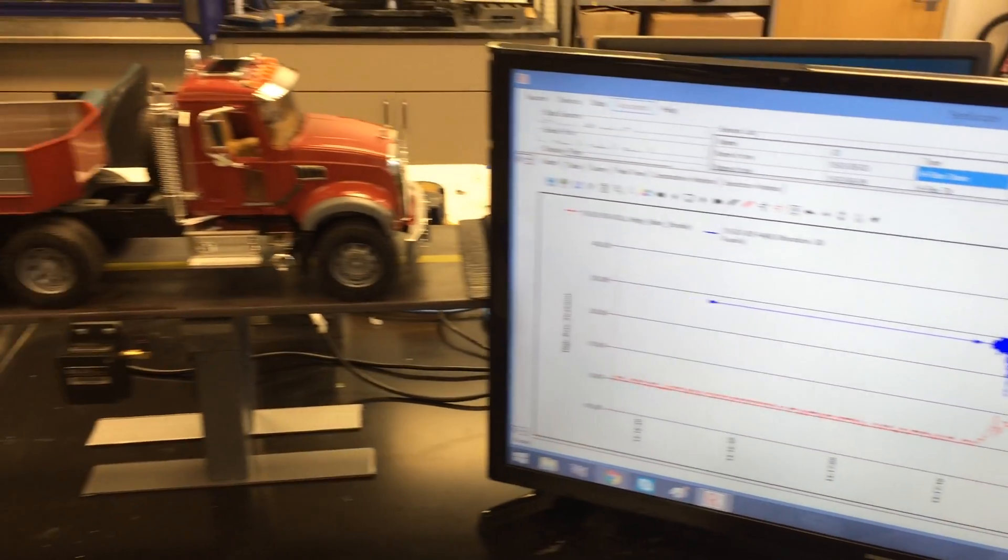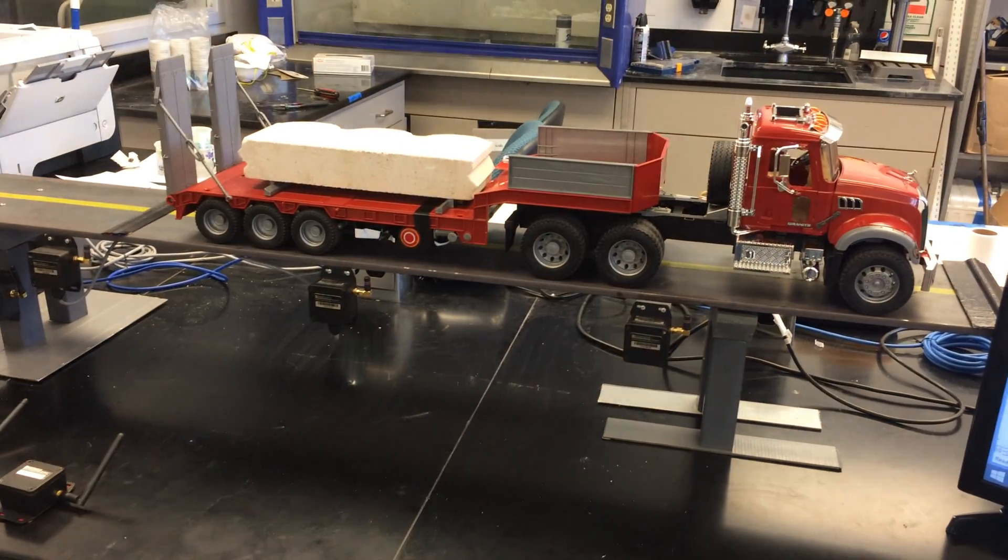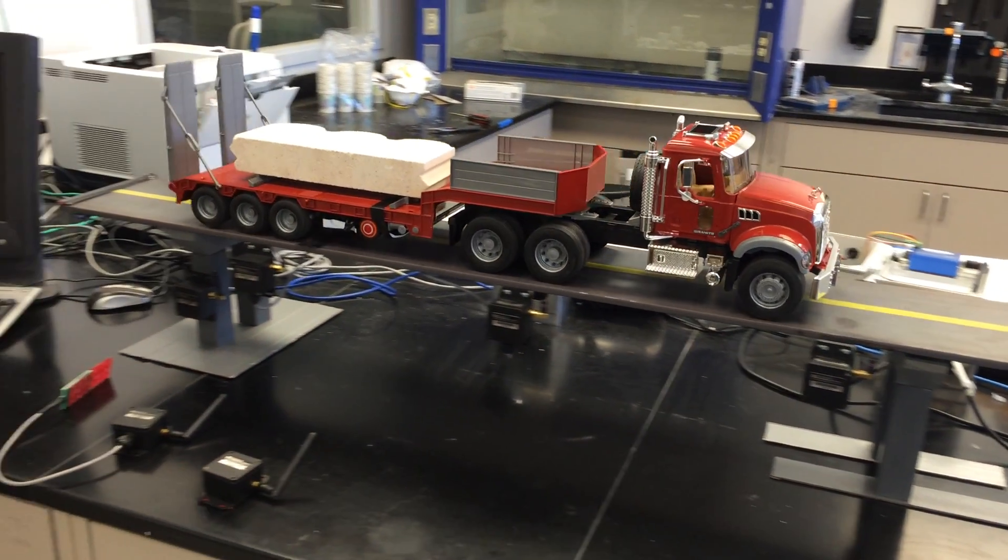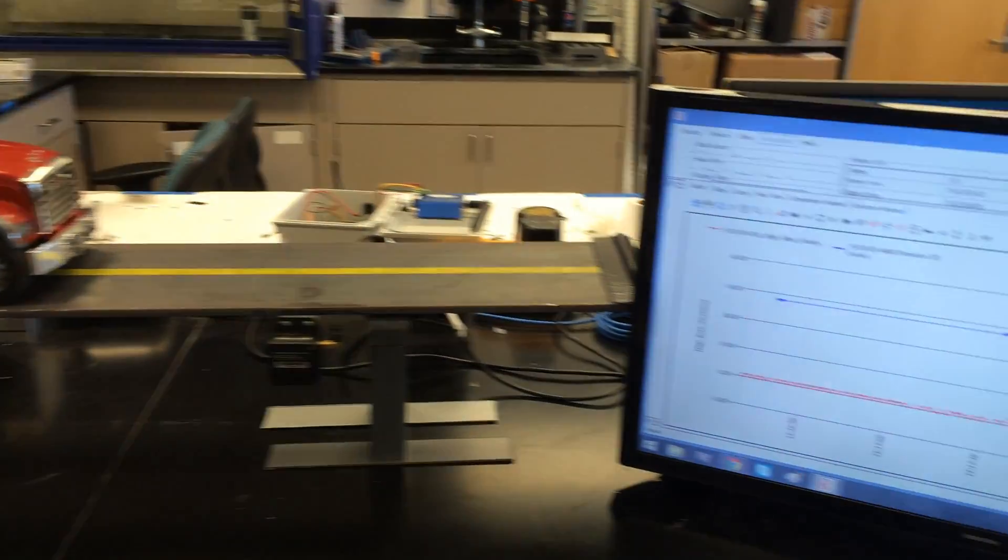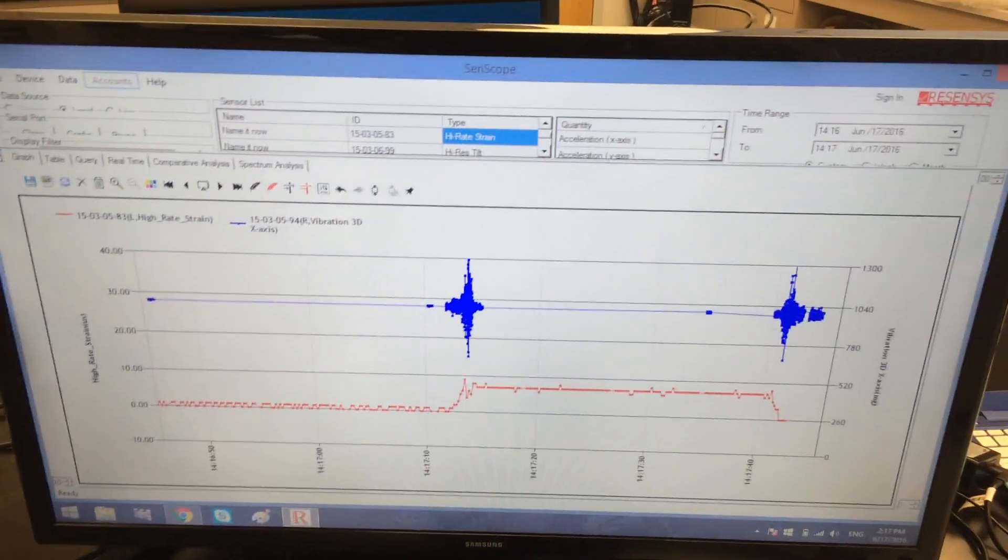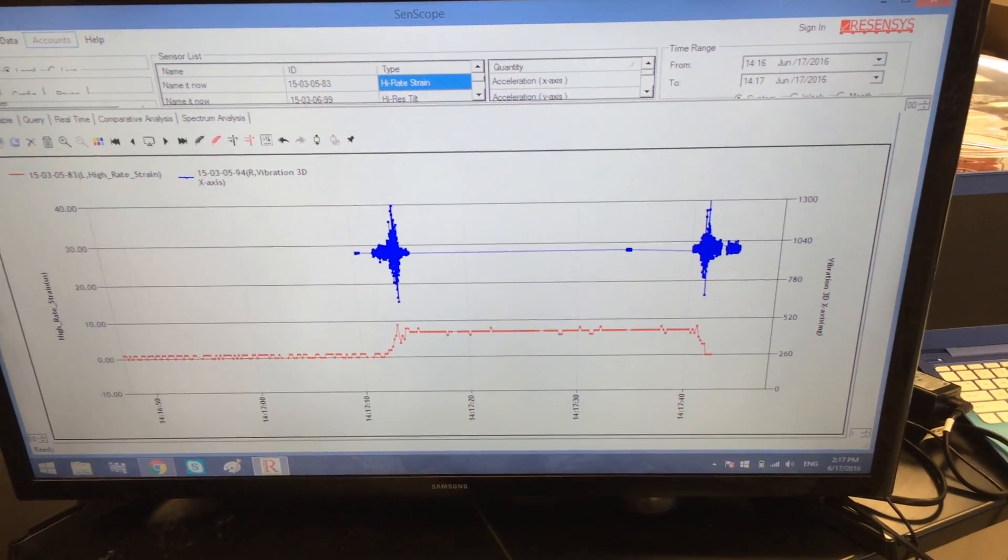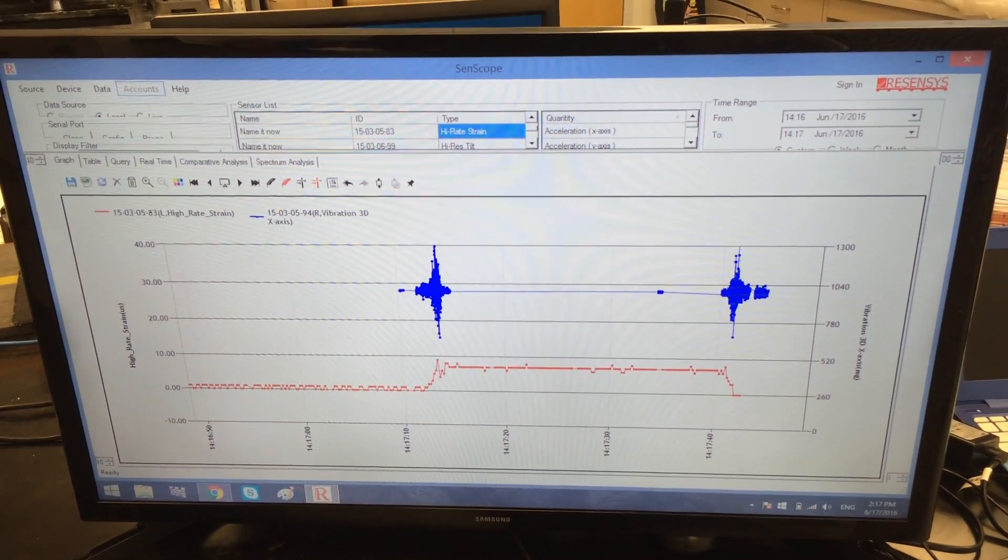Next, we move the truck back to where it was. Again, we see vibration as a result of movement of the truck over the small bump. Also, strain decreases to the level it was before the first move.